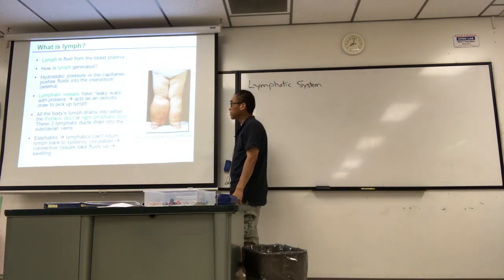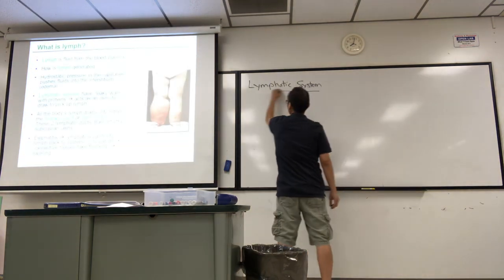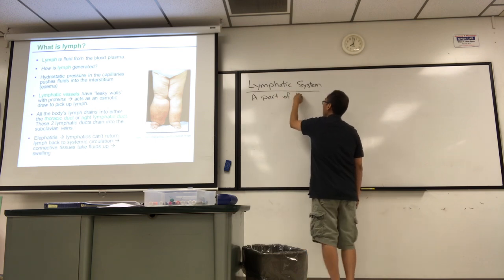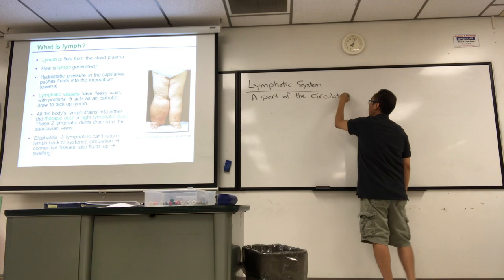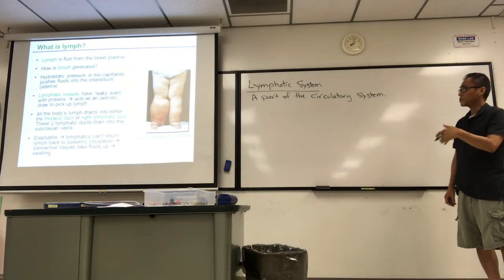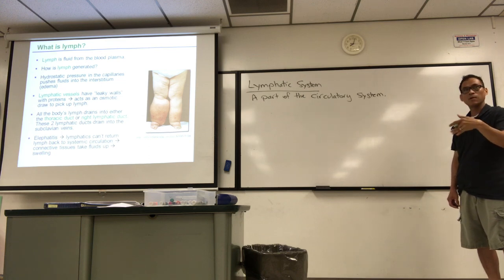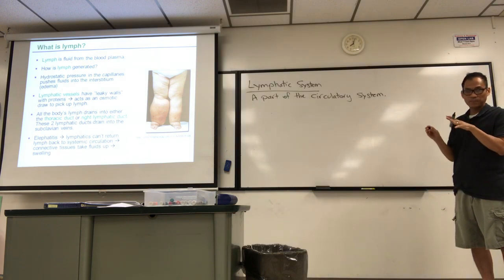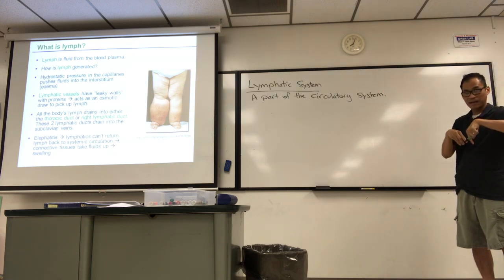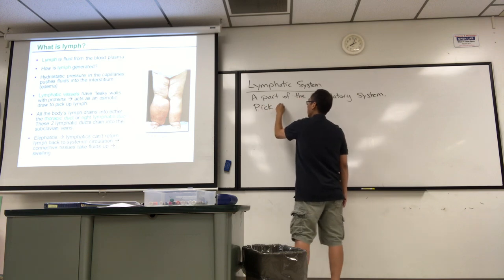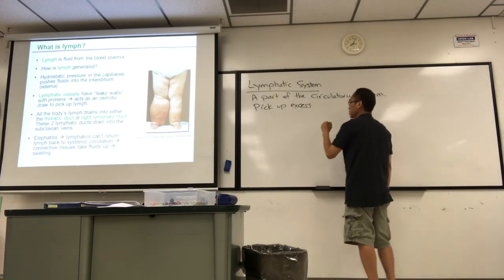You can see the edema or swelling that's quite obvious. So the lymphatic system is a part of the circulatory system — that's one of its functions. We just studied cardio, so we understand how it's a closed circuit. It always goes arteries, capillaries, veins, back to the heart. There's exchange and filtration at the capillaries, but not all fluids filtered out of blood capillaries are reabsorbed back into the venous side. So it's the job of the lymphatics to pick up excess fluids from blood capillary exchange.